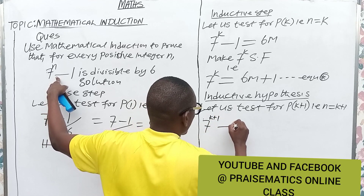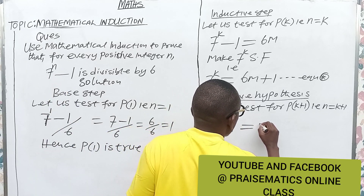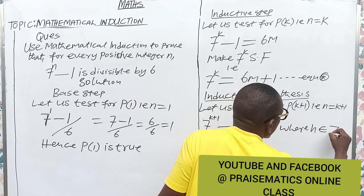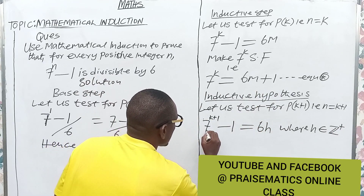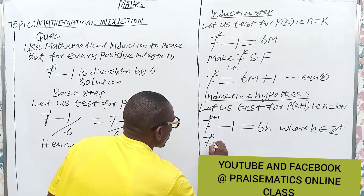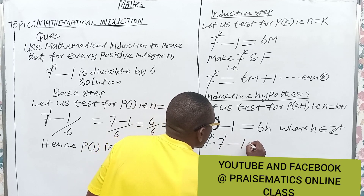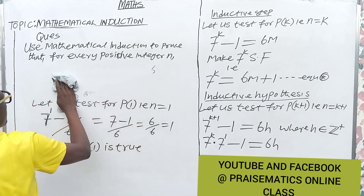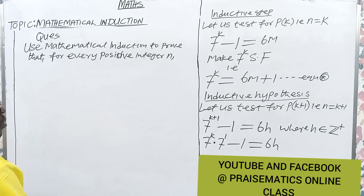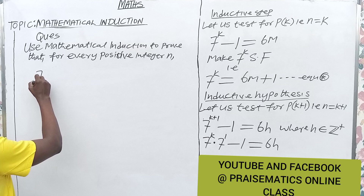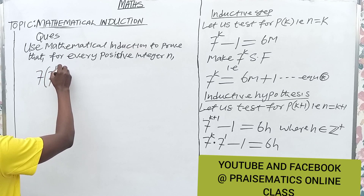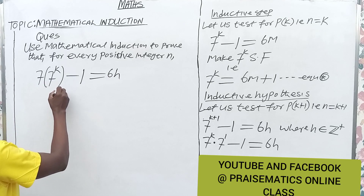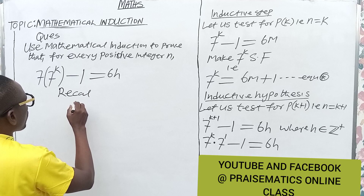By the laws of indices, we can split this as 7 raised to power k, times 7 raised to power 1, minus 1. Is this divisible by 6? Now from here we can rewrite this as 7 times 7 raised to power k, minus 1. Recall from equation star that 7 raised to power k equals 6m plus 1.